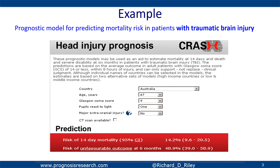Here's an example — a prognostic model for predicting mortality risk in patients with traumatic brain injury. Behind the scenes there's a logistic regression equation that gives the predicted risk of 14-day mortality for an individual when you enter the values of their predictors for this model: country, age, Glasgow Coma score, pupillary reactivity to light, and extracranial injury. Plugging these in for a particular individual from Australia, age 47, we see that their risk of 14-day mortality based on this CRASH tool is 14.2%. A simple example of a clinical prediction model.